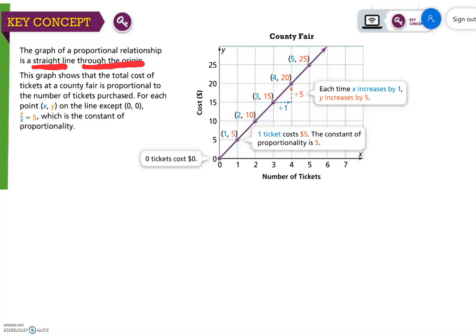For each point, y/x on the line, except for (0,0), equals 5, which is the constant of proportionality. If we look even at the unit at 1, it goes to 5. So that's our unit rate.